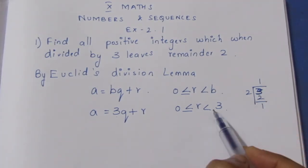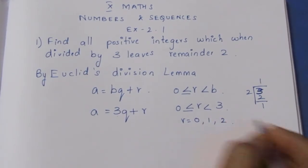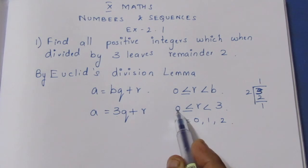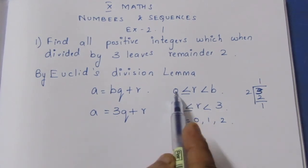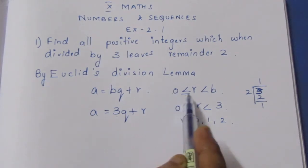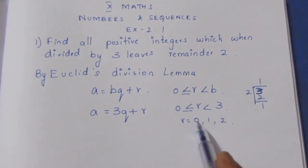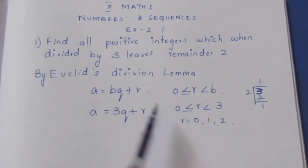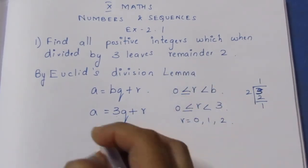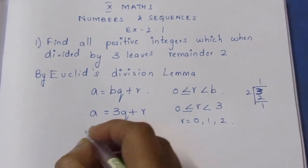When dividing by 3, the remainder r can be 0, 1, or 2 — because r must be greater than or equal to 0 and less than b, which equals 3. Since this problem requires the remainder to be 2, our equation becomes a is equal to 3q plus 2.